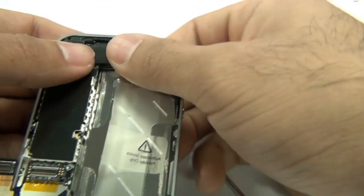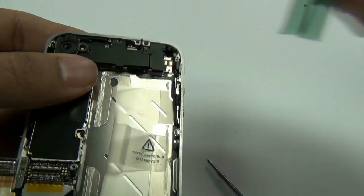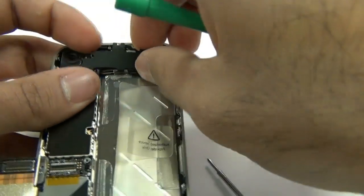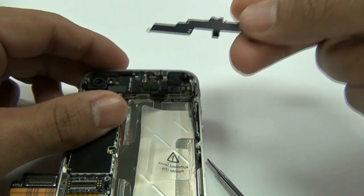With the five screws removed, you can remove the metal bracket shield. It is a little bit tricky to remove, so you will have to wiggle it a bit to get it to pop off.